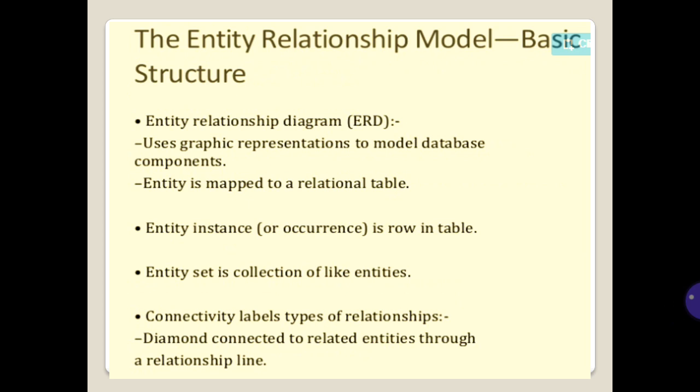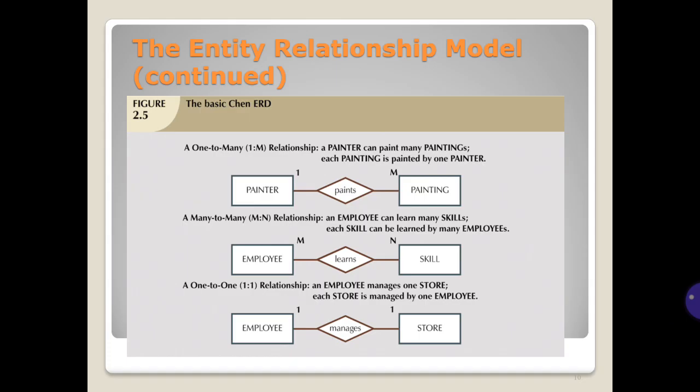The basic ERD relationships: a one-to-many relationship — a painter can paint many paintings, but each painting is painted by one painter. A many-to-many relationship — an employee can learn many skills, and each skill can be learned by many employees. A one-to-one relationship — an employee manages one store, and each store is managed by one employee.